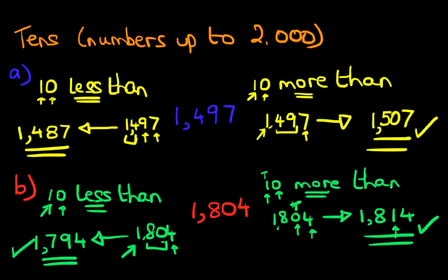And that is how we do more than and less than of tens with numbers up to 2,000.